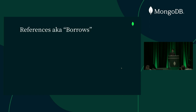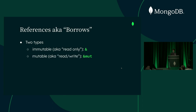In Rust, there are two types of references. Immutable, denoted by a single ampersand — these allow you to read the data you're referencing, that's it. And also mutable references, denoted by the &mut keyword, which allow you to read or write to the data you're borrowing. The BorrowChecker enforces two rules when using these references. Rule one: borrows must not outlive their data. The reason for this is that if you attempt to use a reference to something that's been deallocated, you'll get undefined behavior, which we know is very bad.